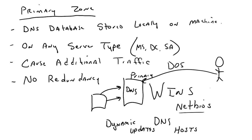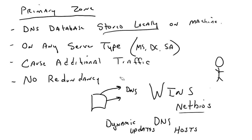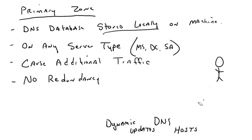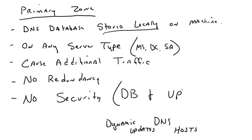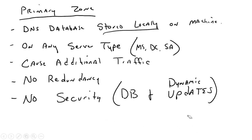The problem with a primary zone is that when it comes to dynamic updates, it's either on or off — you cannot put any security on dynamic updates. Also, because the primary zone is stored locally on the box as a flat file, and that flat file can be opened because there's no encryption, primary zones offer you absolutely no security — no security on the database and no security on dynamic updates.